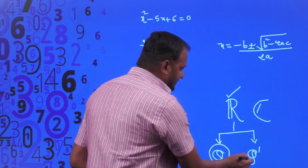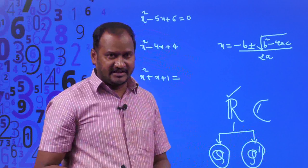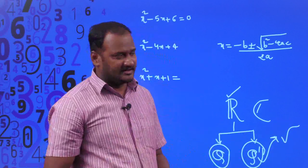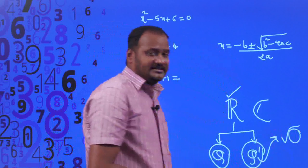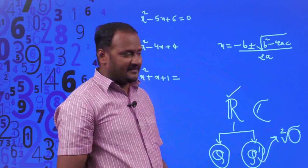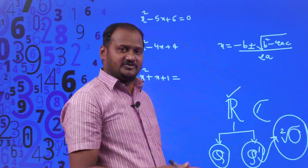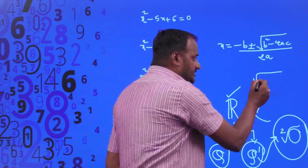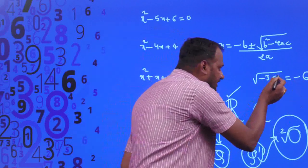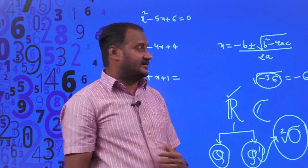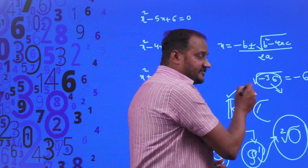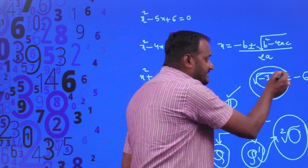Real numbers consist of rational and irrational numbers. If a number is non-real, it is a complex number. Irrational numbers appear inside square roots. If the value inside the square root — the radicand — is negative, the result is imaginary. For example, √(-36) cannot equal -6 because no real number squared gives a negative result. That is why √(-36) is an imaginary number.